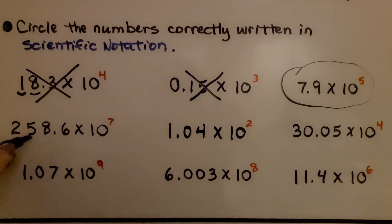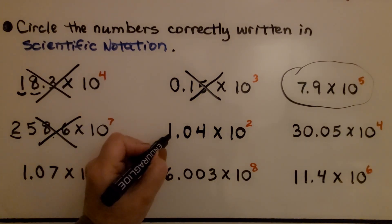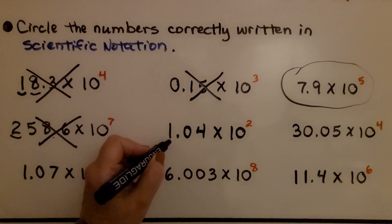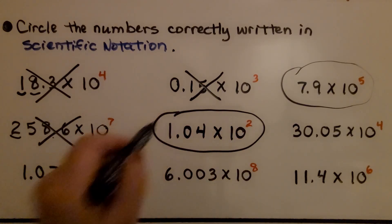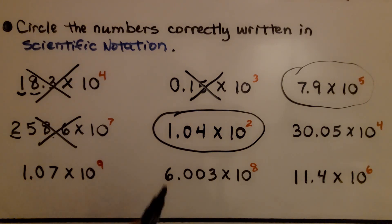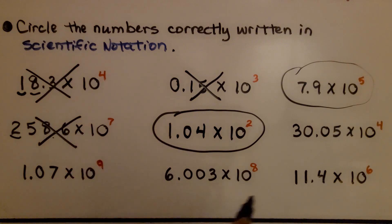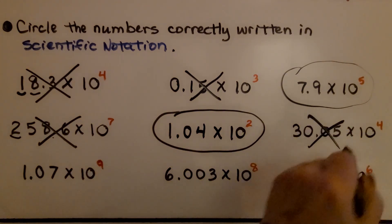Look at this one — the decimal is in the hundredths place, so that's not in scientific notation; the decimal is in the wrong place. Here we have 1.04 — we have a digit greater than or equal to one and less than ten, so that works — that is written in scientific notation. We can quickly just look and see if there's one digit in the ones place, then the decimal point. Here we have 30 and then the decimal point, so that's not scientific notation.